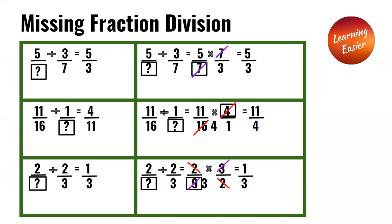11 over 16 divided by 1 over something is equal to 11 over 4. Applying KCF: 11 over 16 times something over 1, which equals 11 over 4. We have to make the 16 reduce to 4, so the missing number has to be 4, because 16 divided by 4 is equal to 4. When we simplify the 16 and the 4, we get 11 over 4 as the answer.